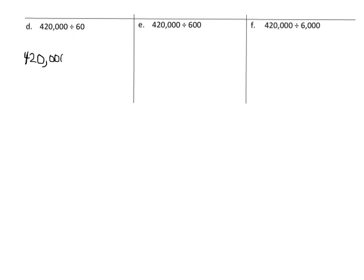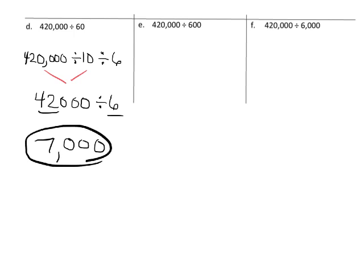Now we're going to do examples where we divide by a multiple of a power of 10, rather than just a power of 10. For 420,000 divided by 60, we break it into two parts: first divide by 10, which removes a zero giving us 42,000, then divide by 6. Since 42 divided by 6 is 7, we end up with 7,000.